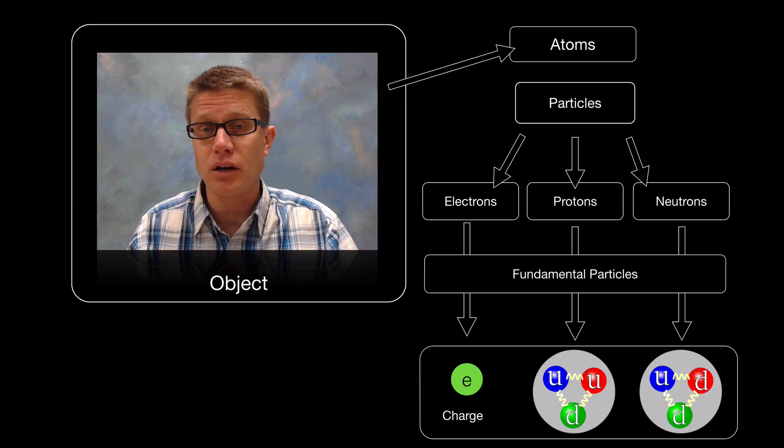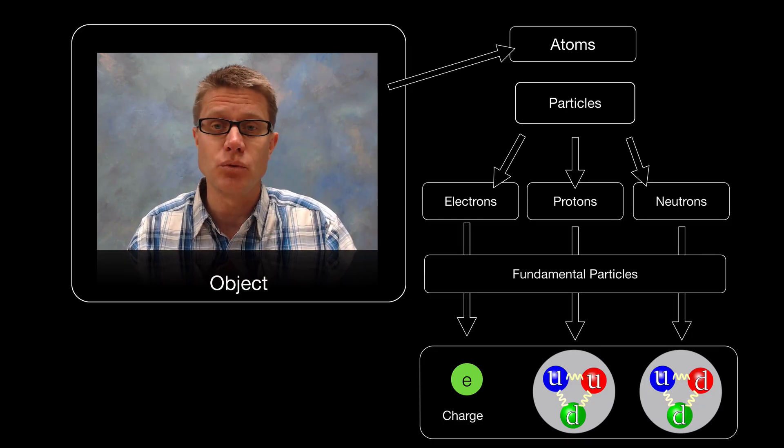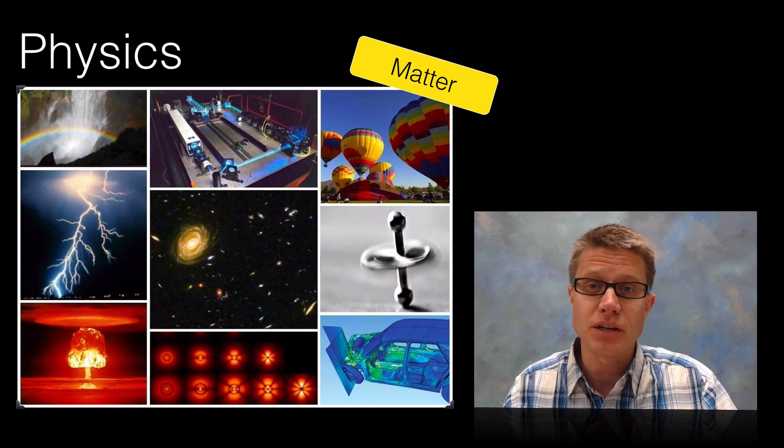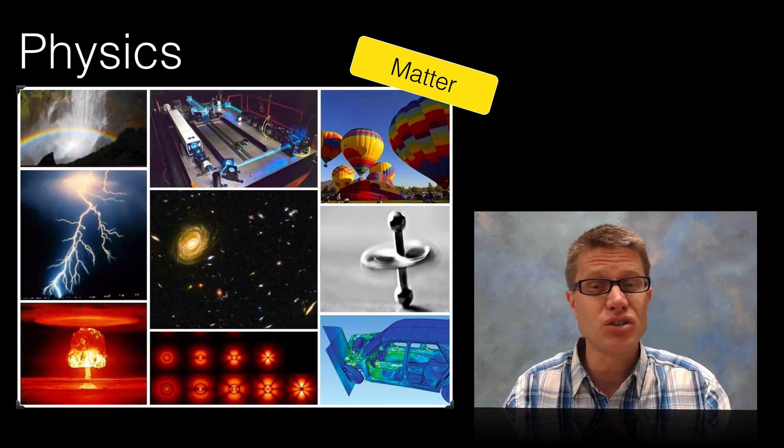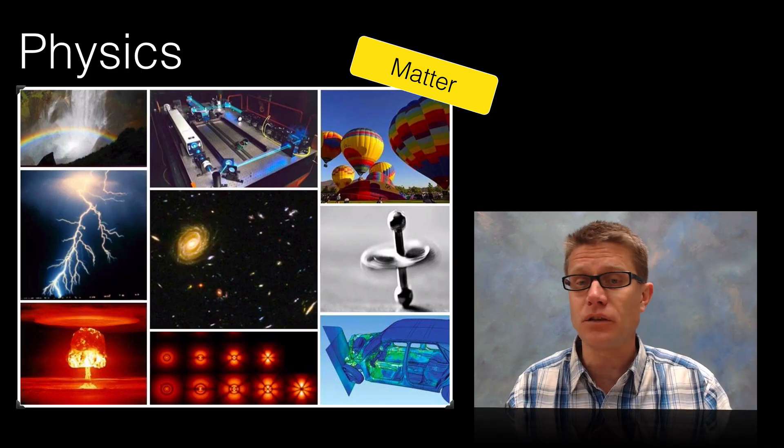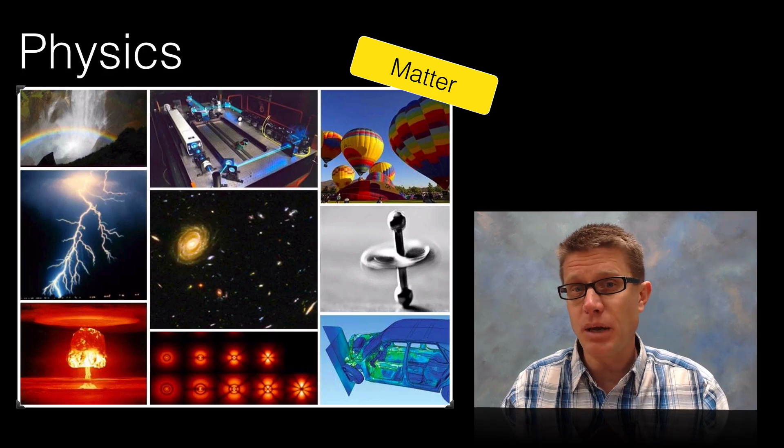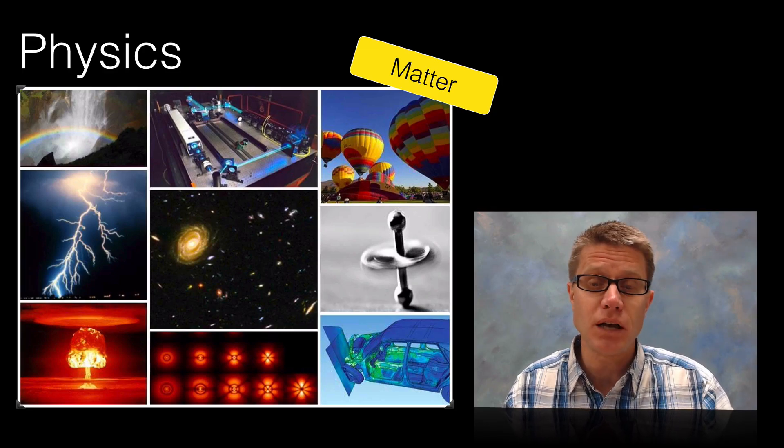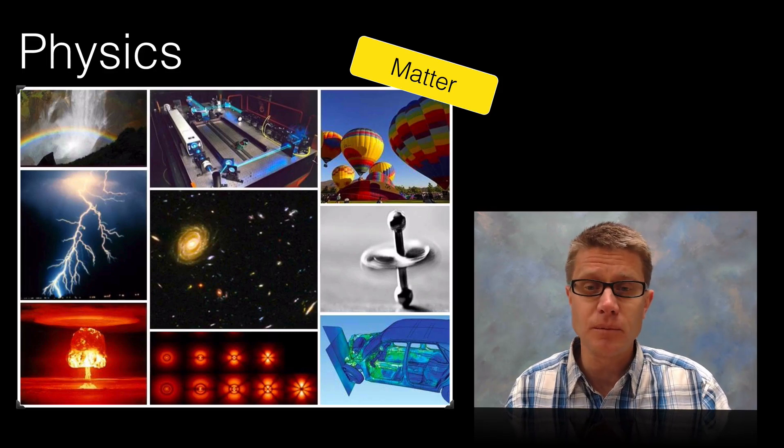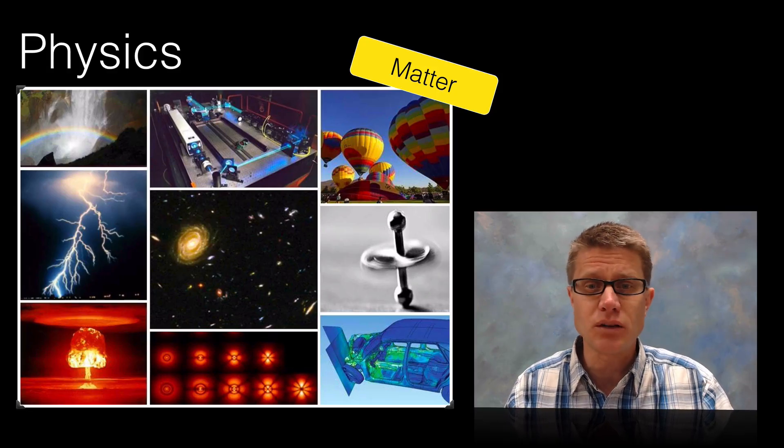For example the charge of a proton and neutron comes from its constituent parts. And so in physics we are going to study matter through space and time at all these different levels. And so since we are studying matter it is important that we understand a base unit on what matter is made up of. And when we are solving problems you have to understand what is an object and what is a system.